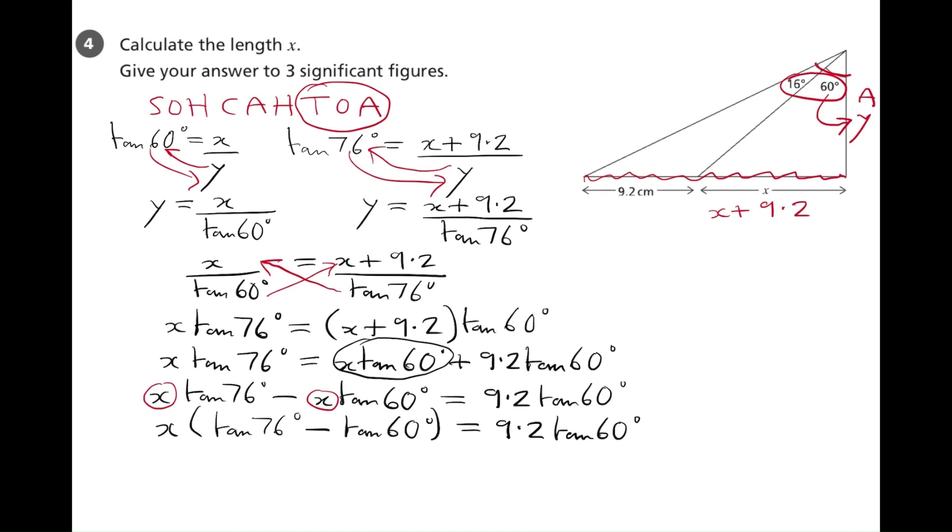And finally, to get the value of x, we need to divide by that large bracket. So, x would be 9.2 tan 60 divided by tan 76 minus tan 60. And we now work out this on our calculator, make sure the calculator is in degrees mode, and we get a final answer of 6.99 centimetres. And that's the final answer.